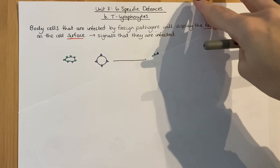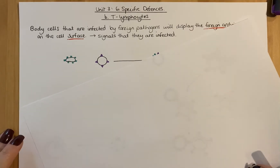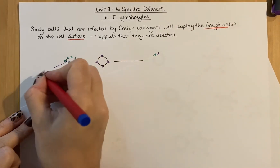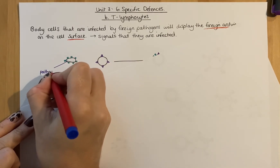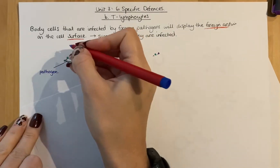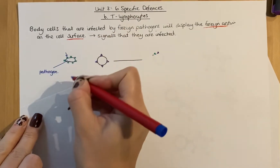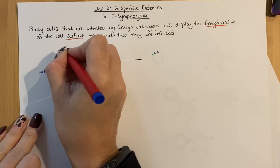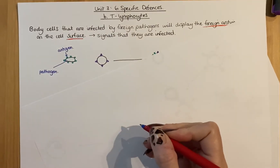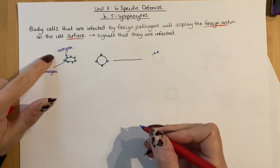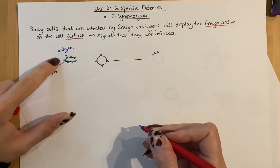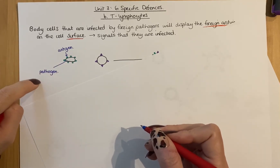Here is a quick diagram. This is a pathogen — that could be a bacteria, a virus, or whatever else. Like we talked about in the previous video, this is an antigen on its surface. Antigens are made of protein, and your body will determine whether that is a self-antigen or non-self. This is a non-self antigen — it doesn't belong to your body because it's part of a pathogen.